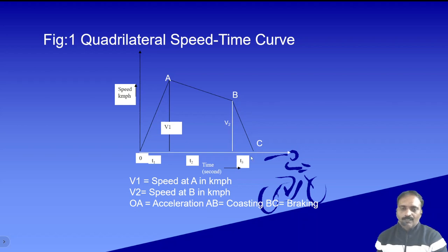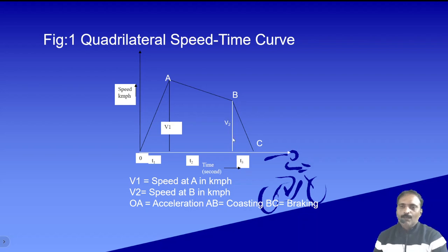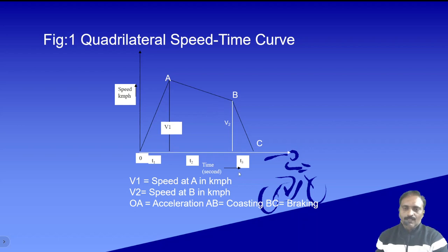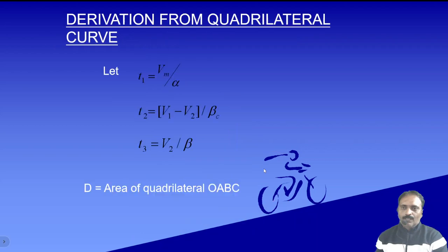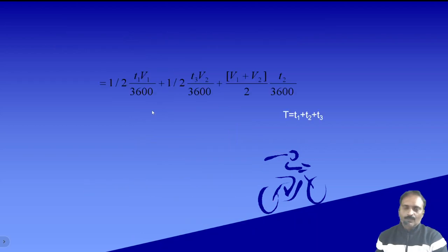The second triangle has area equal to half times t3 (divided by 3600) multiplied by v2. The area of the trapezoid is half times t2 times (v1 plus v2), the sum of the parallel sides. Adding these three areas gives the total distance D.